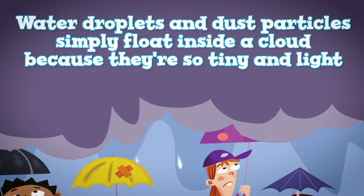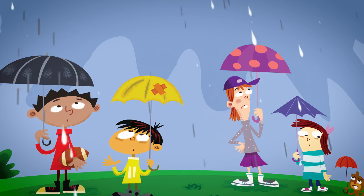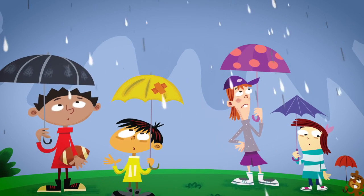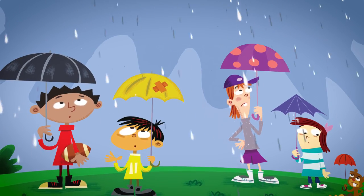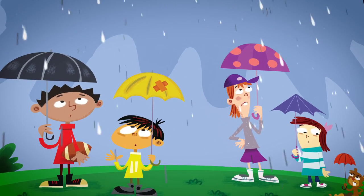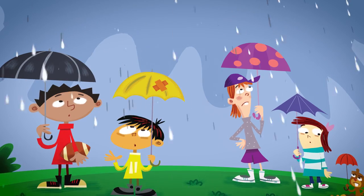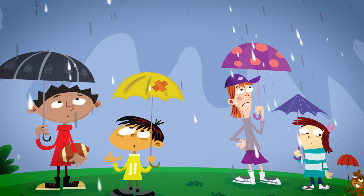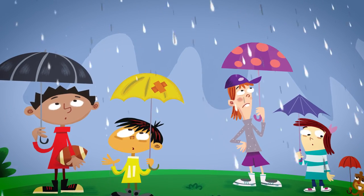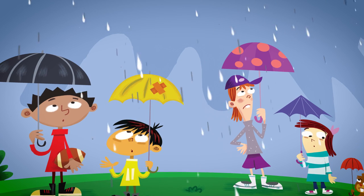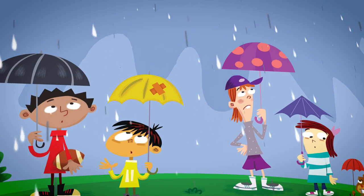On their own, water droplets and dust particles simply float inside a cloud because they're so tiny and light. But when there are countless millions of them, the droplets collide with one another, clinging together and becoming bigger and heavier. Eventually the cloud becomes too heavy, and gravity causes the water droplets to fall back to earth as rain.